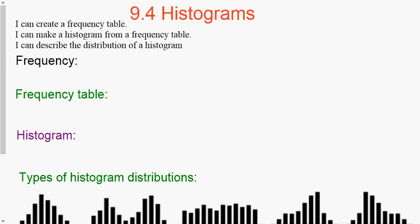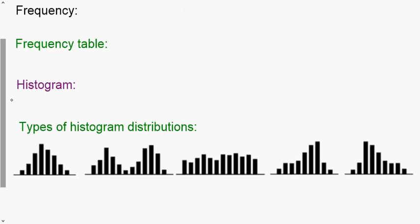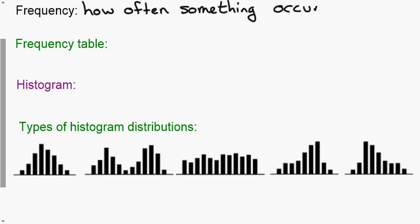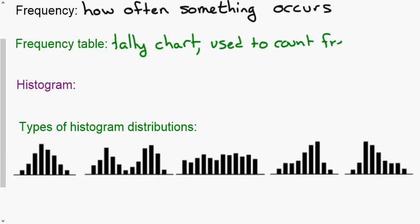We start with a few terms. The first one is frequency, which is just how often something occurs. To count the frequency, we use a frequency table, which is basically a tally chart used to count the frequency. We have a chart with intervals, and we use the tally chart to count how many data points fall within each interval. When you count up the total number of tallies, we call that the frequency.